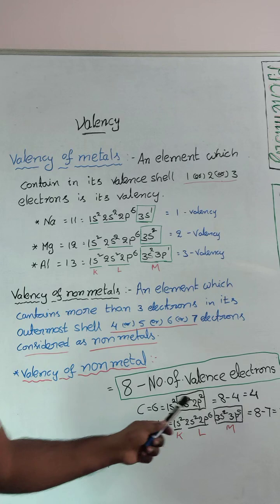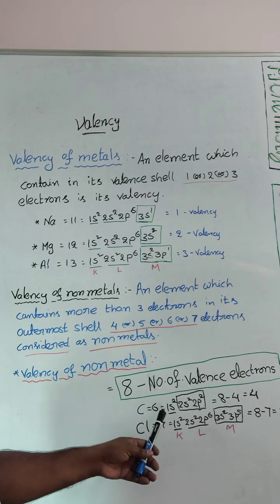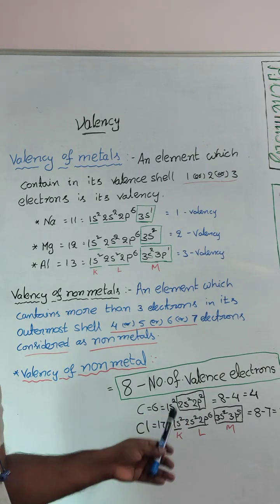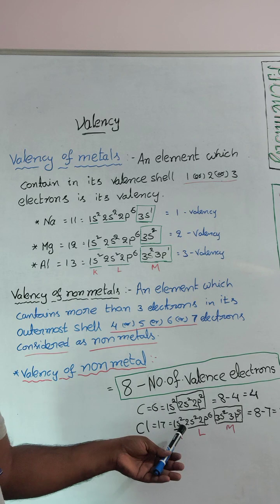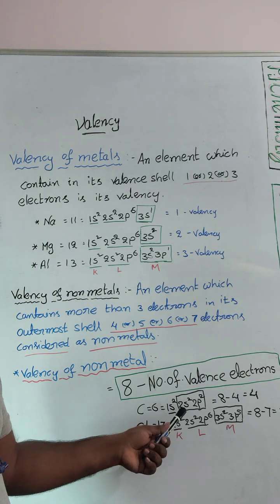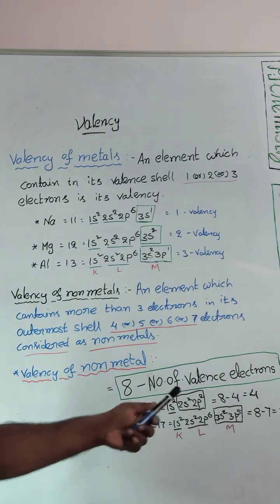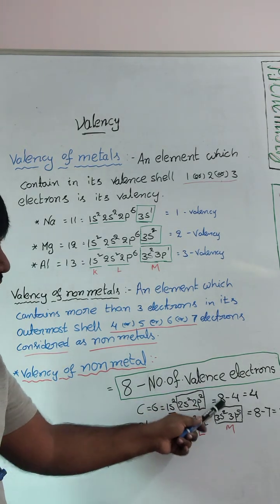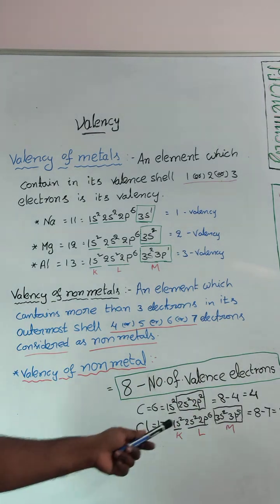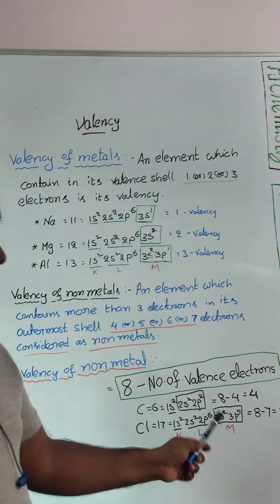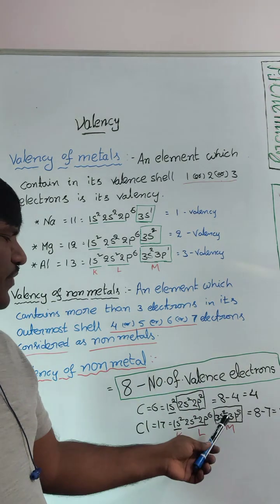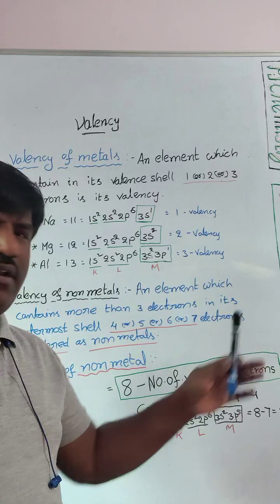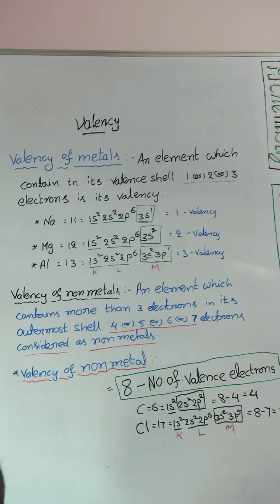For Carbon: 1s2, 2s2, 2p2. The first shell is 1s2; the second shell — the Last Shell — is 2s2, 2p2, which is the Valence Shell. The Valence Shell contains 4 Electrons. So 8 minus 4 equals 4 — Valency of Carbon is 4. For Chlorine: the Last Shell contains 3s2, 3p5, total 7 electrons. So 8 minus 7 equals 1 — Valency of Chlorine is 1.